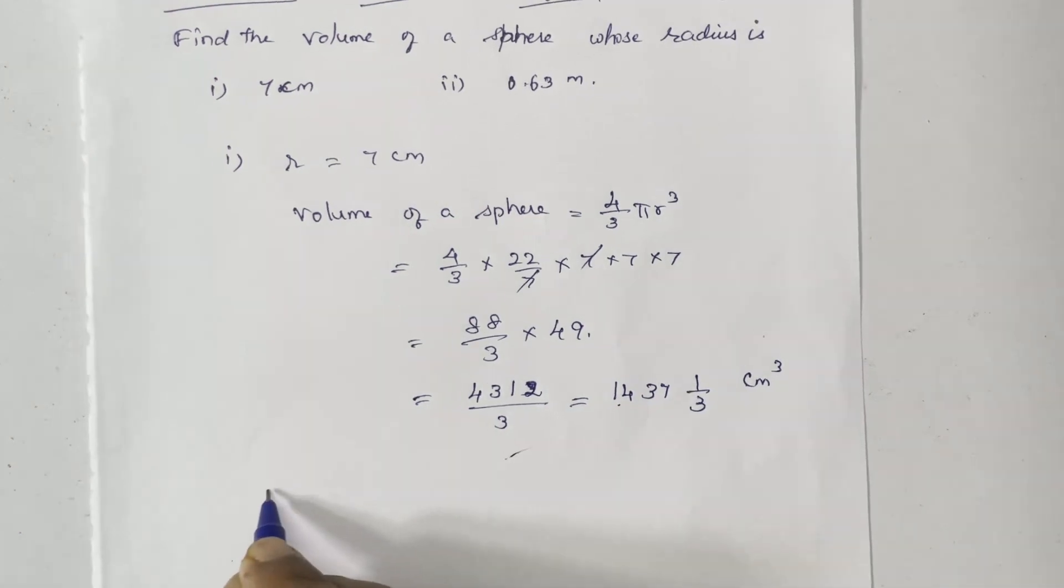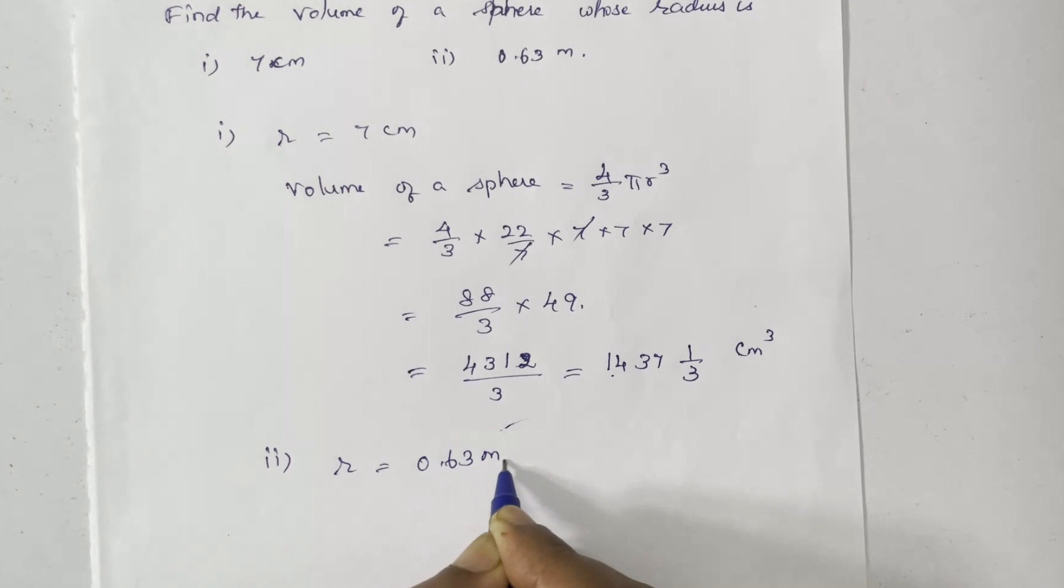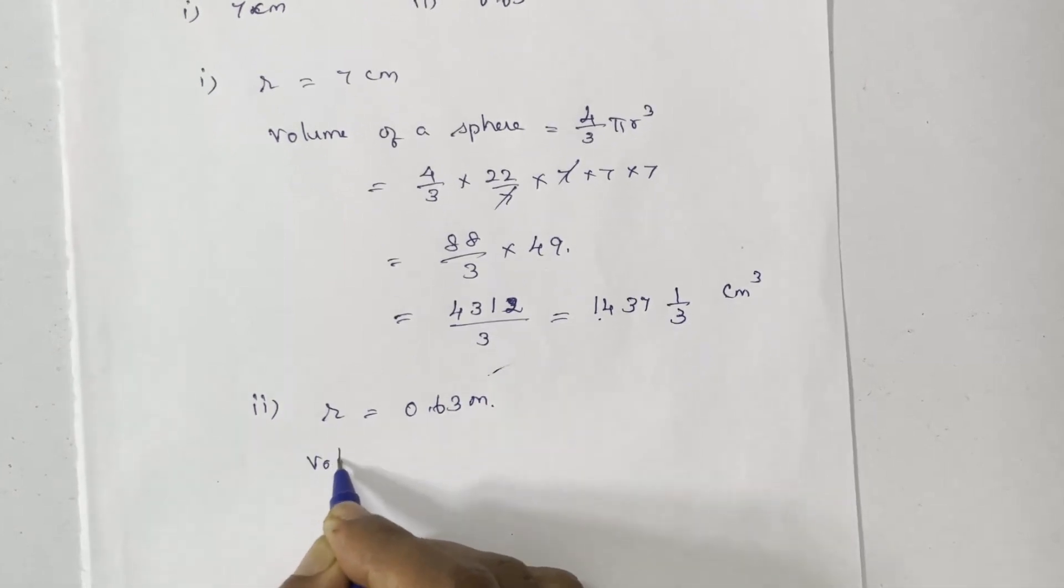Answer is a mixed fraction. That's how we write it. Or if you want decimal, it will be 1437.3. That's it. Second division.